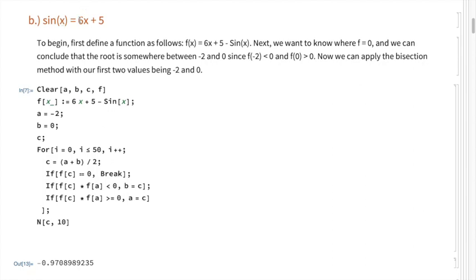Problem b: sine of x equals 6x plus 5. Using the same thought process, we evaluate our function for various values around zero and find that f(x) equals zero somewhere between negative two and zero. Those are our starting integers. We define f(x) = 6x + 5 - sin(x) and find where f(x) equals zero, then run the same bisection method code for 50 iterations.